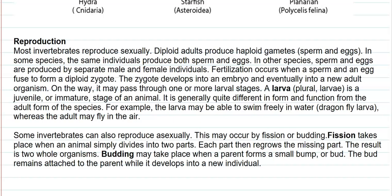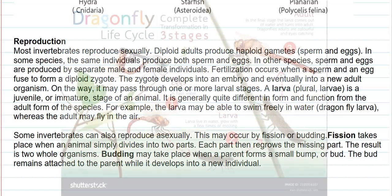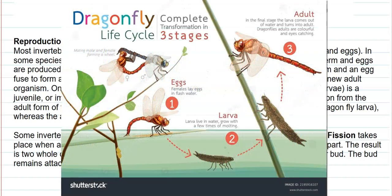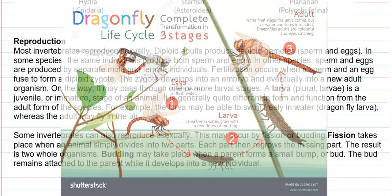On the way, the organism may pass through one or more larval stages. A larval stage is a juvenile or immature stage of an animal, generally quite different in form and function from the adult. A typical example is a dragonfly — the larva of the dragonfly can swim freely in water, whereas the adult dragonfly can fly in the air.